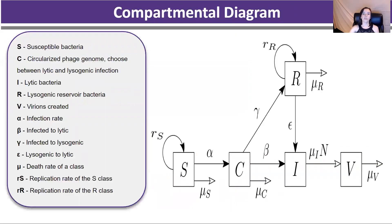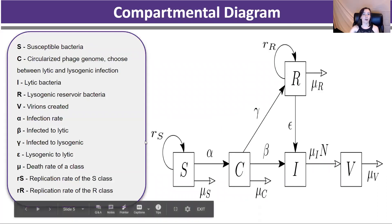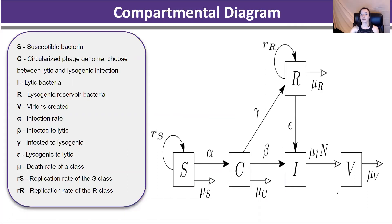We can show all this happening with a compartmental diagram, where we can illustrate the S-class being our susceptible bacteria, C being the infected bacteriophages, which has a choice — it runs into either the lysogenic or lytic pathways. The lytic pathway will go on to create these virions, which are released into the system as an SV.